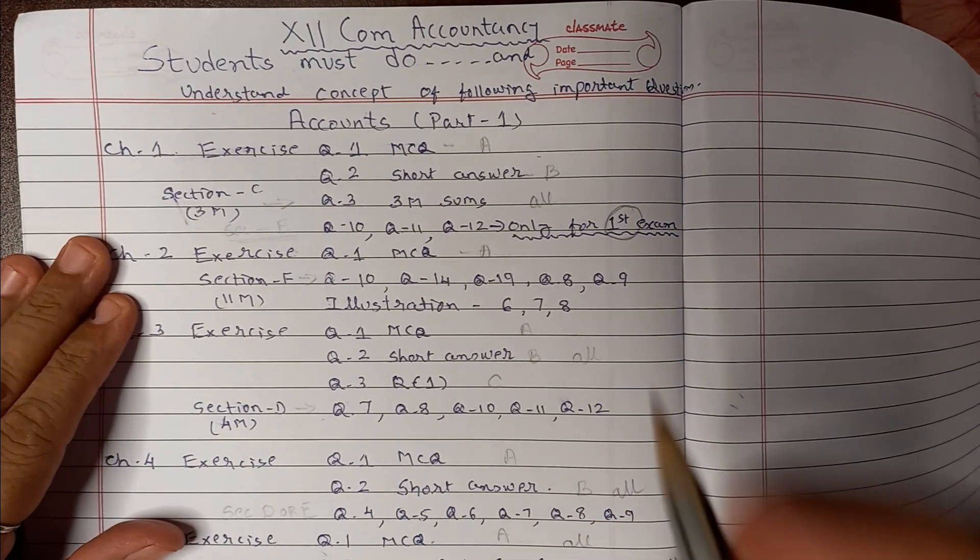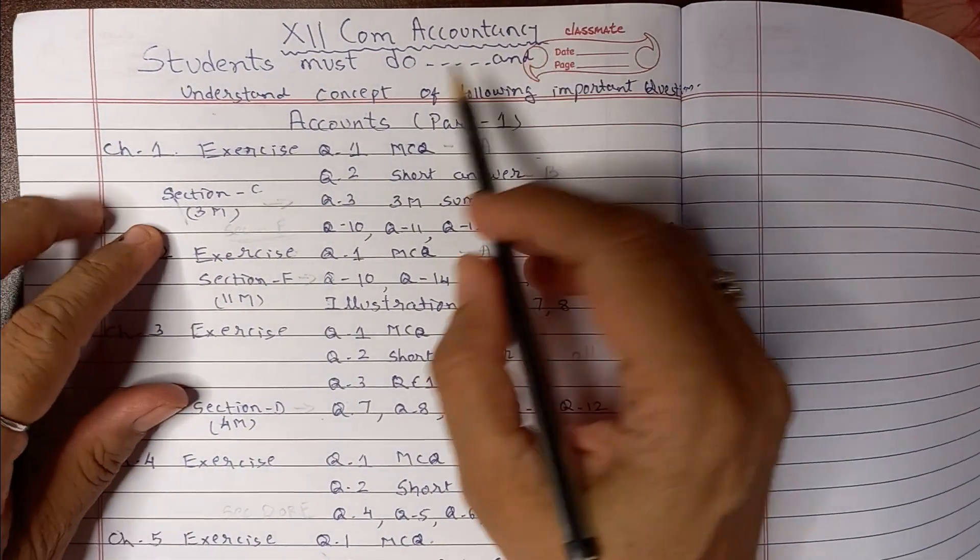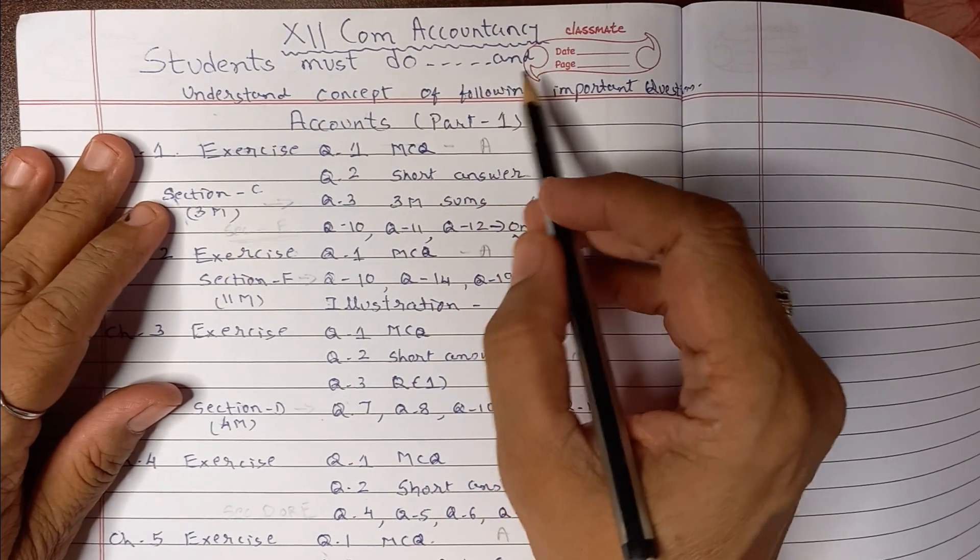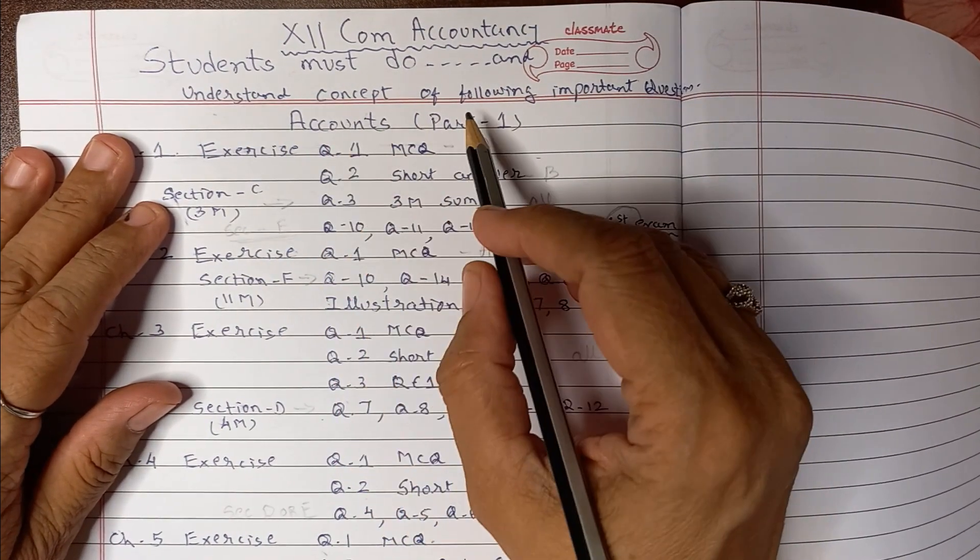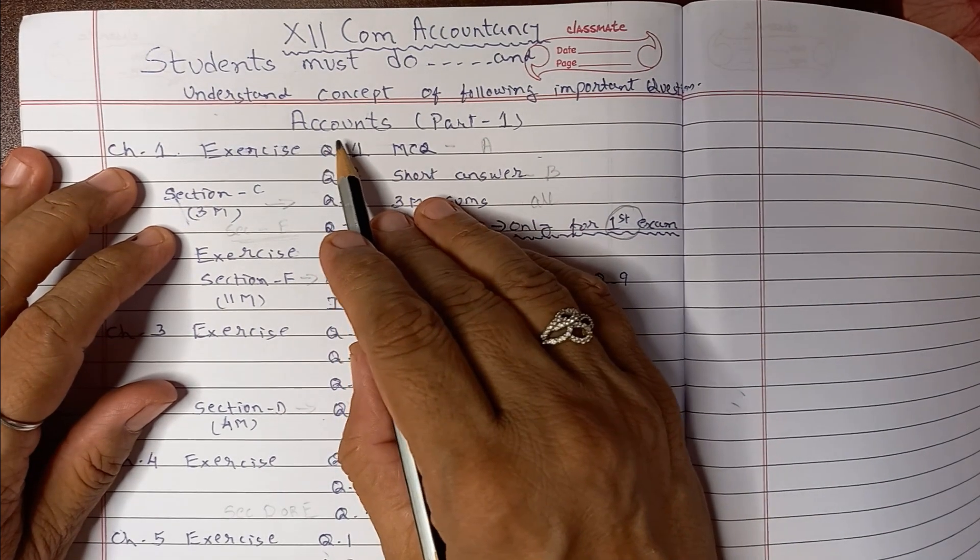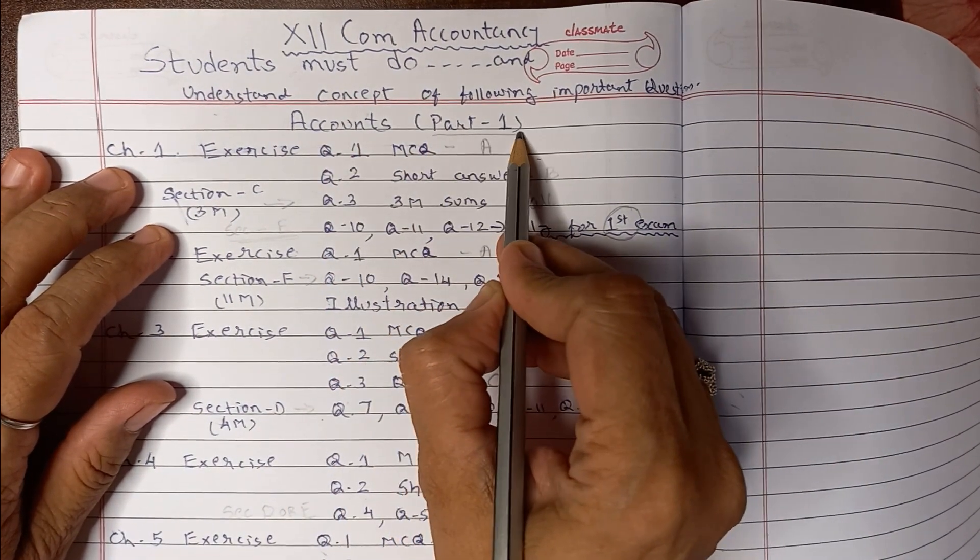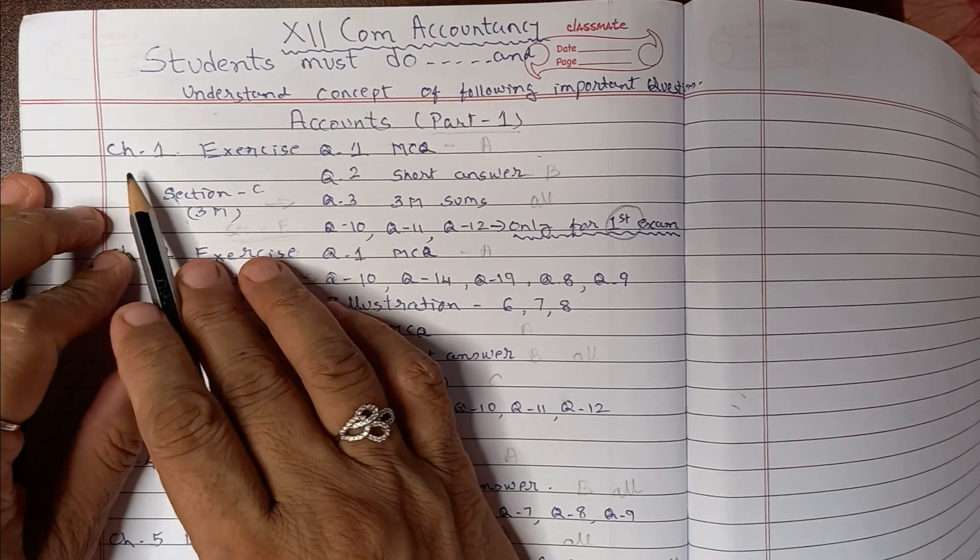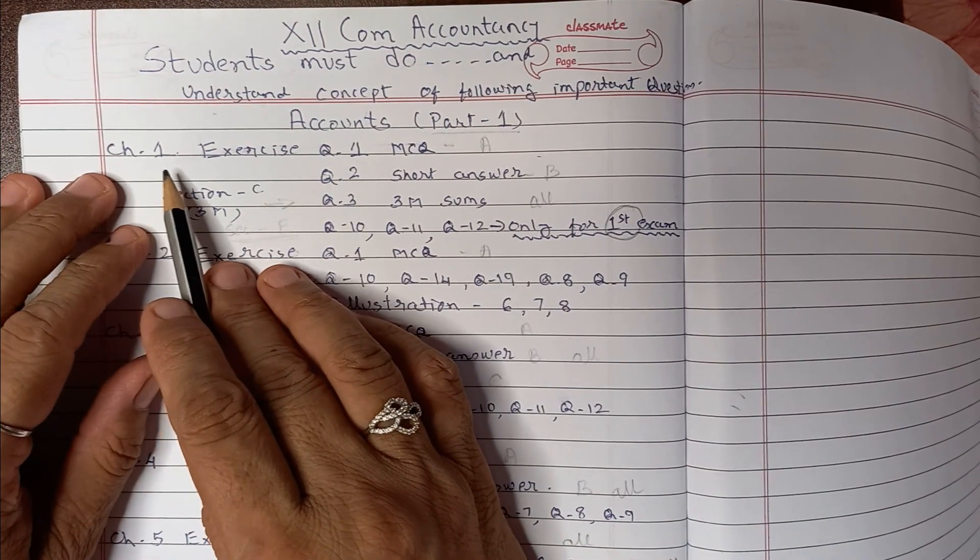Good morning friends, for the 12th standard students must do and understand the concept of following important questions. We are discussing about your accounts part 1. In part 1, chapter number 1 is introduction to partnership.